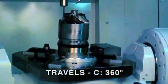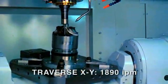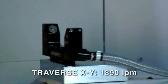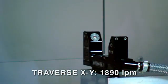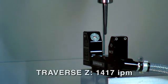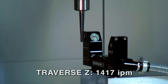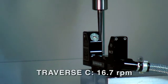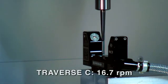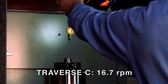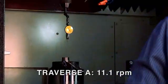The rapid traverse in X and Y is 1,890 inches per minute. The Z rapid traverse is 1,417 inches per minute. The C traverse is 16.7 revolutions per minute. The A is 11.1 revolutions per minute.